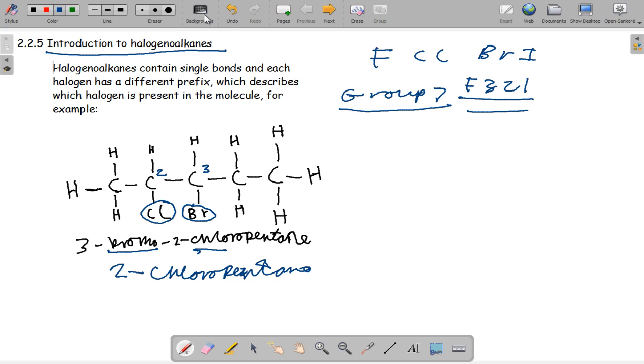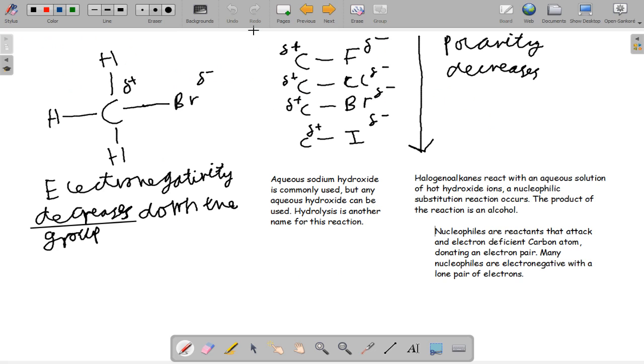The next point is their reactivity. Halogen atoms are more electronegative than carbon atoms. Electronegativity is the ability for an atom to attract bonding electrons to itself. Bromine would attract the bonding electrons better than carbon, and fluorine is the most electronegative atom on the periodic table. The bonding electrons would be more on the fluorine side than carbon. So a polar bond is formed with a slightly negative side and slightly positive side. The electronegativity of each atom decreases down the group, and therefore their polarity decreases.